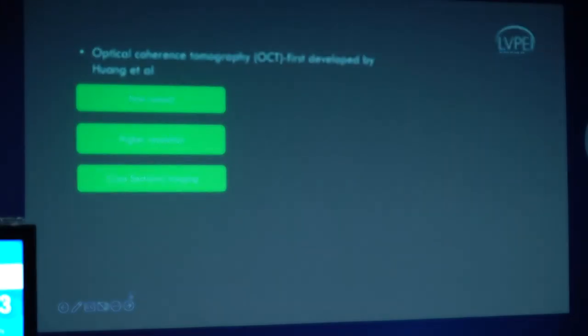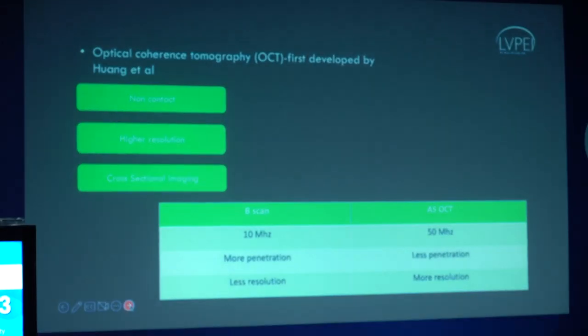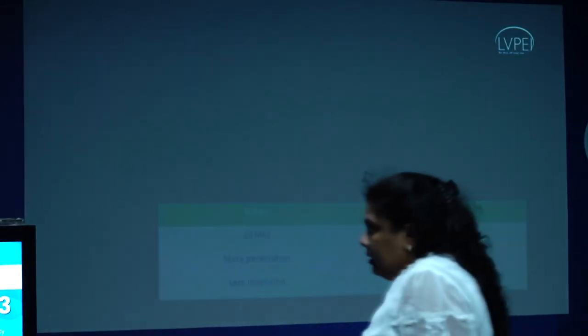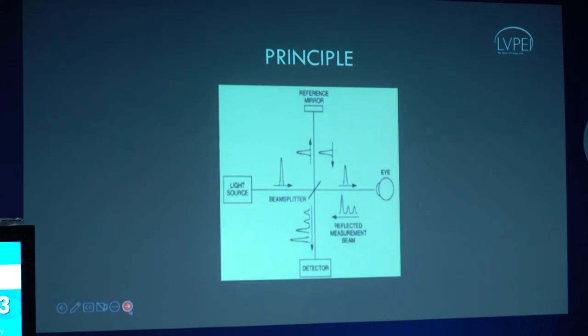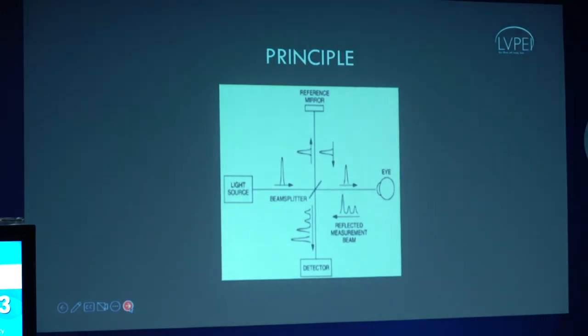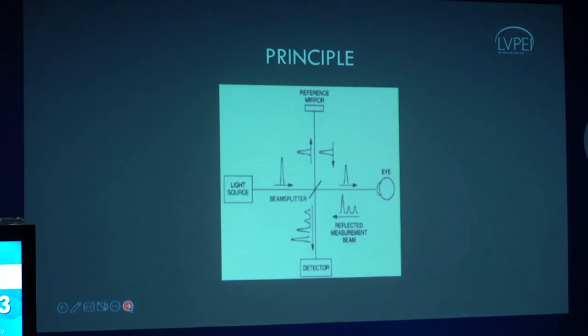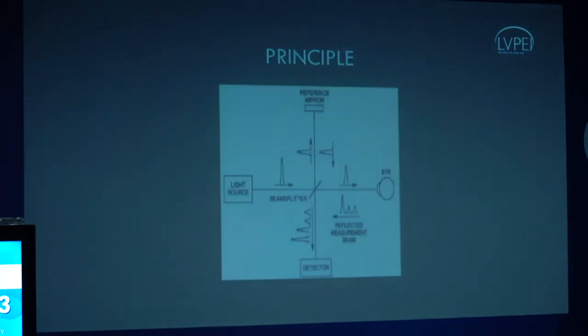OCT was first developed by Yohan et al. as a non-contact method to provide higher resolution cross-sectional imaging. It refers to B-scan primarily in having a higher frequency, although it has less penetration but in turn gives better resolution. The principle is based on Michelson's interferometry, where the light source is received by the beam splitter and then reflected onto the reference mirror, which can be measured at variable depth to obtain the image of our choice.